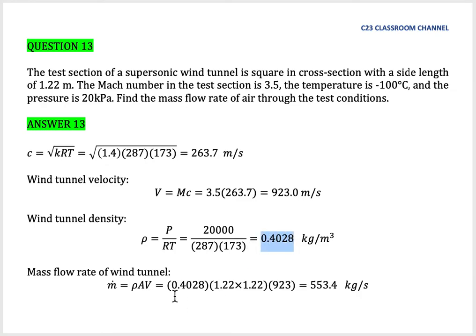A is the cross-section mentioned in the question. It has a square cross-section of 1.22 meters, so we multiply 1.22 times 1.22 and multiply with the velocity of the wind in the wind tunnel.